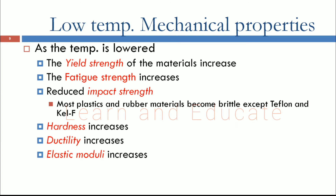Regarding the variation of mechanical properties at low temperatures: as temperature is lowered, yield strength increases, fatigue strength increases, but impact strength reduces. Most plastics and rubber materials become brittle at low temperature, except Teflon and Kellef. Hardness also increases at cryogenic temperatures.